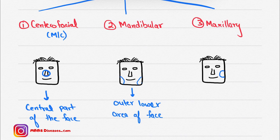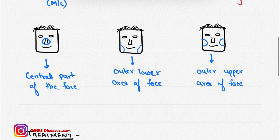Now if this area and this area are involved, then it is the maxillary type. These are the types of melasma.